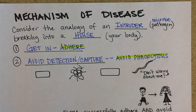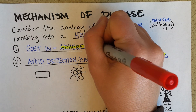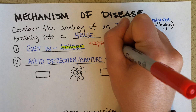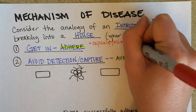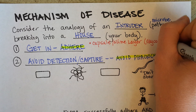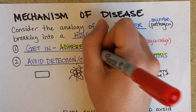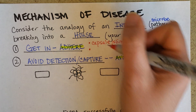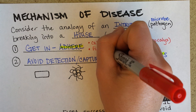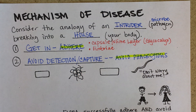Getting in and adhering — bacteria usually accomplish this with the aid of a capsule or a slime layer, in other words a glycocalyx. Another way that they tend to be very good at attaching, as in the case of E. coli, is fimbriae — little hair-like projections that help them hang on to our cells.